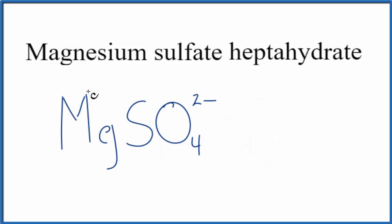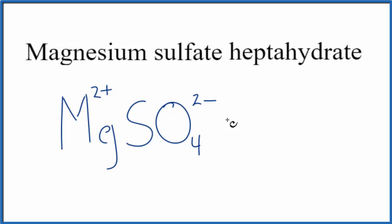Because we have a metal, magnesium, and then this group of nonmetals, the sulfate ion, this is an ionic compound and we need to balance the charge. If you look on the periodic table, magnesium is in group two, so it'll have a 2+ ionic charge. We said the sulfate is 2-. Since these two add up to zero, the net charge is zero — this is the formula for magnesium sulfate.